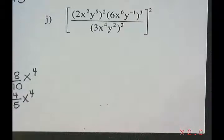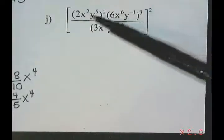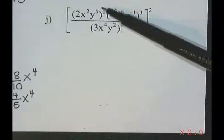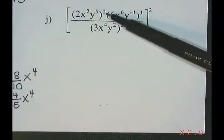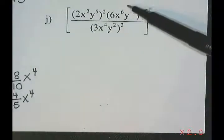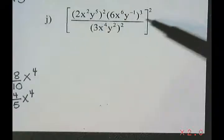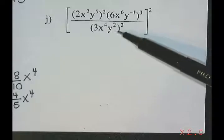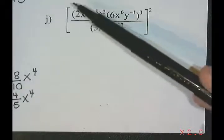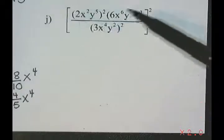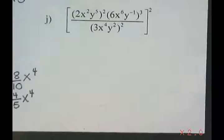This is the last part of our video on exponent laws. Unfortunately, we ran out of time on the last one. So our last question here says 2x squared y to the 5, all squared, times 6x squared y to the negative 1, all to the power of 3, divided by 3x to the 4 y squared, all squared, and then that entire thing is also all squared.